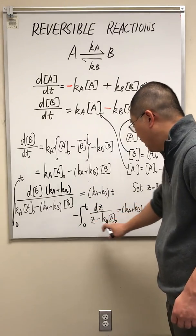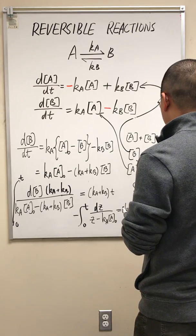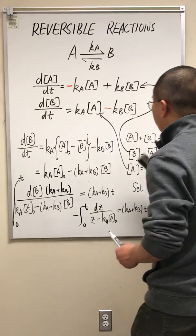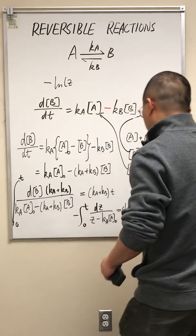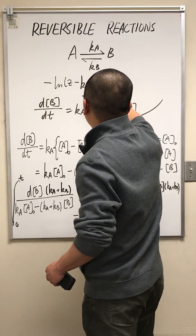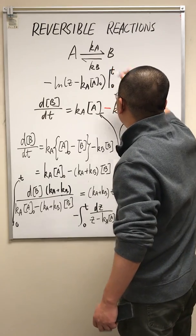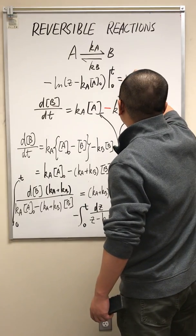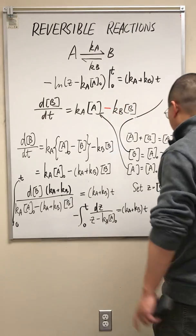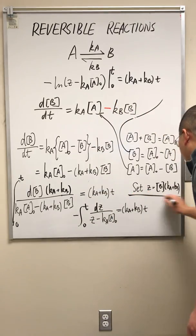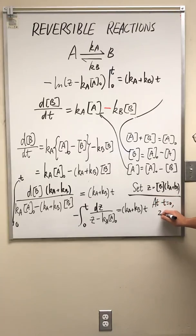Integrating this part gives the natural logarithm of Z minus kA times A0. So the integral with limits from time zero to time T, with the negative sign, equals kA plus kB times T. At time zero, Z equals zero, because Z is the concentration of B times kA plus kB, and at time zero B is zero.